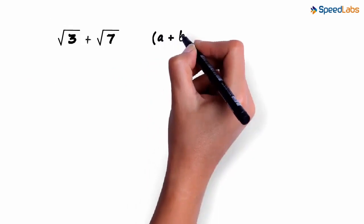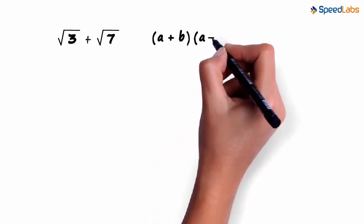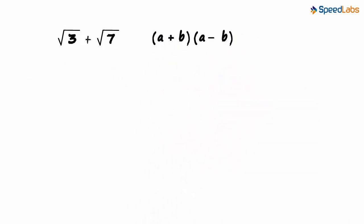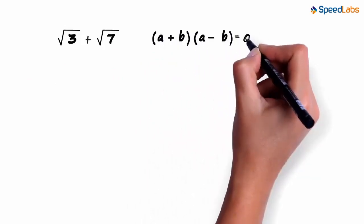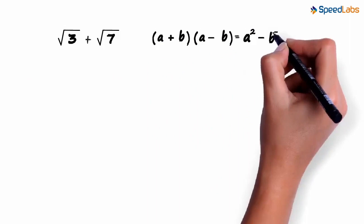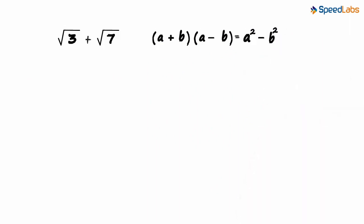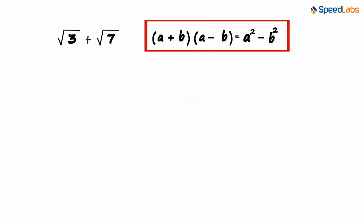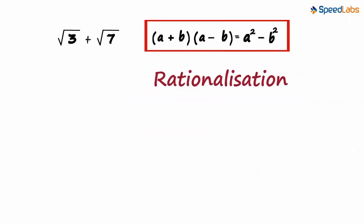Here's a hint: A plus B multiplied by A minus B equals A squared minus B squared. This is one of the most important identities we will use in rationalization.